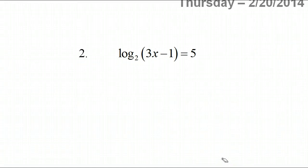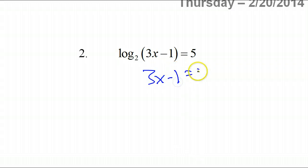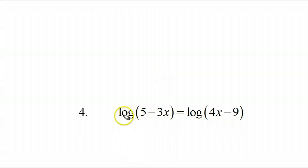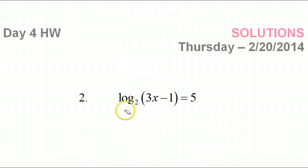Let's look at number 2. This only has a log on one side. Don't sit here and think you're just going to do 3x minus 1 equals 5 — no, that's false, incorrect. That's what you do when you have a log on both sides. If you have log on both sides, set them equal. If you have only the log on one side, you will rewrite it in exponent form.